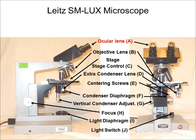First we have the two ocular lenses which, as the name implies, are the lenses closest to your eyes. Typically these have a 10x magnification and contain a wire pointer. They can be adjusted for each individual's requirements. In particular you can adjust the intraocular distance and you can fine tune the focus by rotating the lenses.